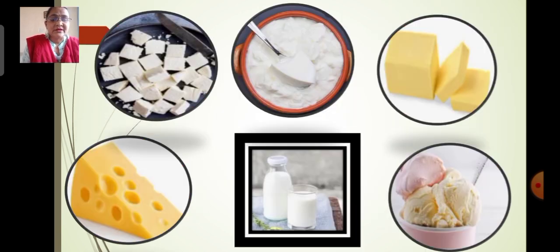Next is milk. Milk is used to make food such as cheese, paneer (which we call cottage cheese), curd, butter, and even ice cream. So here the main ingredient is milk to make these other food items.